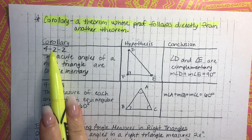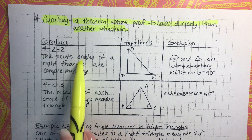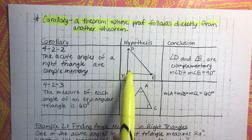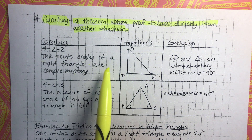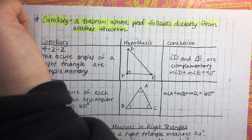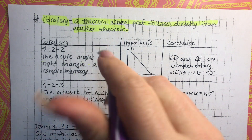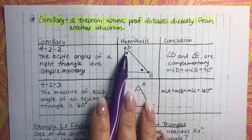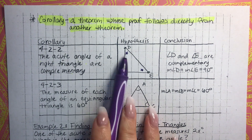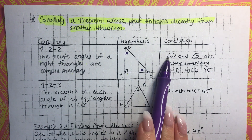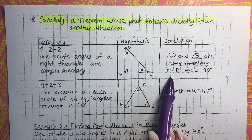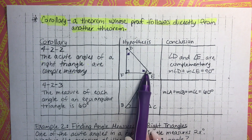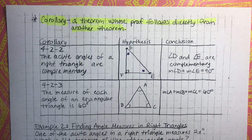The first one is Corollary 4.2.2, which states the acute angles — remember acute are less than 90 — of a right triangle are complementary. A right triangle has an angle that's 90 degrees. So the two acute angles, like angle D and angle E, are complementary, meaning they add up to 90 degrees. That makes sense because all angles in a triangle add up to 180 degrees.